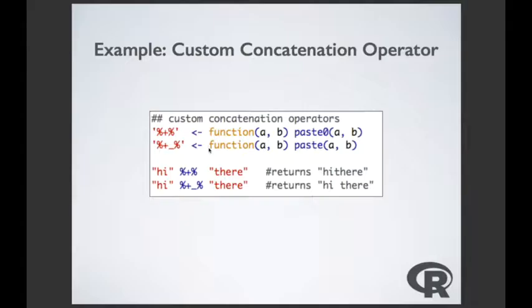Now we're going to talk about using functionals. A functional is technically any function that takes a function as a parameter. We're going to talk about a special group known as the apply family of functionals — sometimes called star-apply. There's apply, which applies functions over array margins; by, which applies a function to data frames split by factors; lapply, sapply, eapply, rapply, tapply, mapply — each returns results in different formats.